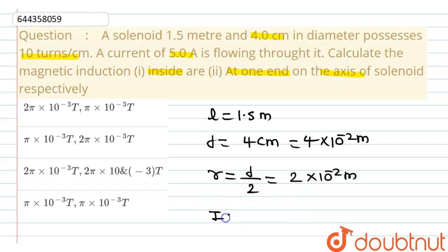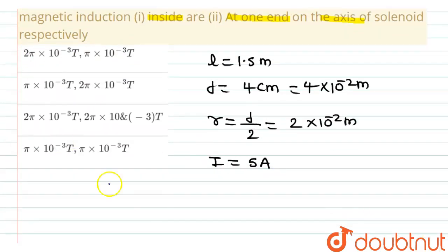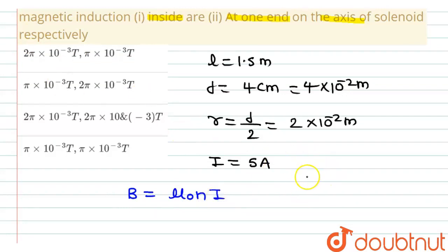The value of current flowing through the solenoid is 5 ampere. We know that the value of magnetic induction inside the solenoid is calculated by the formula μ₀nI, where the value of number of turns per unit length, that is small n, is 10 turns per centimeter.